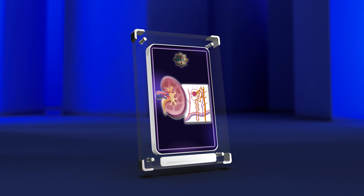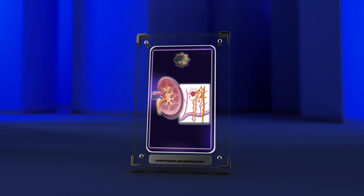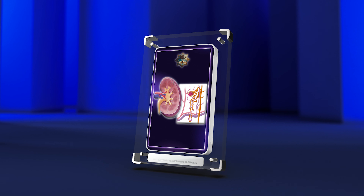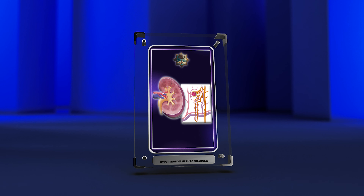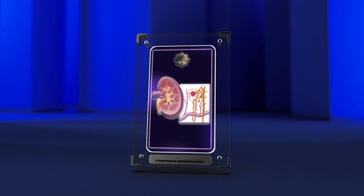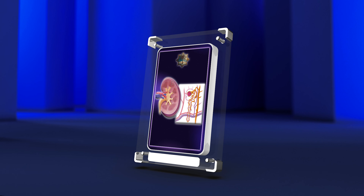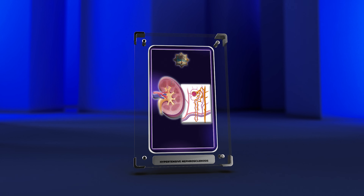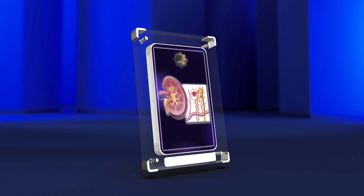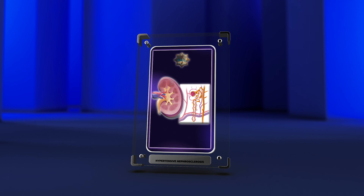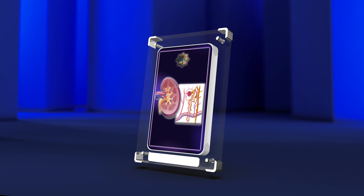In conclusion, hypertensive nephrosclerosis is a condition affecting the kidneys due to chronic high blood pressure. Understanding its anatomy, pathophysiology, presentation, diagnosis, management, prognosis, and prevention is essential for healthcare professionals to improve patient outcomes.